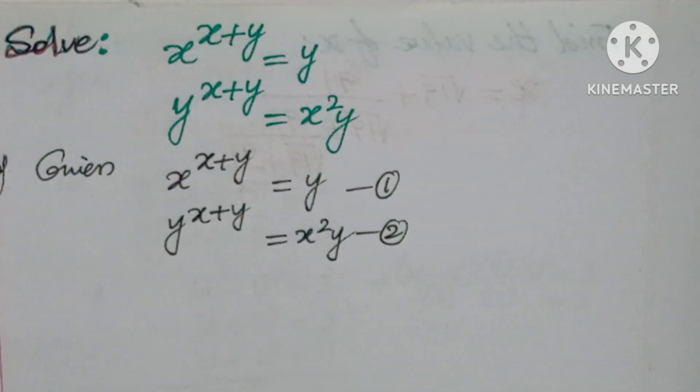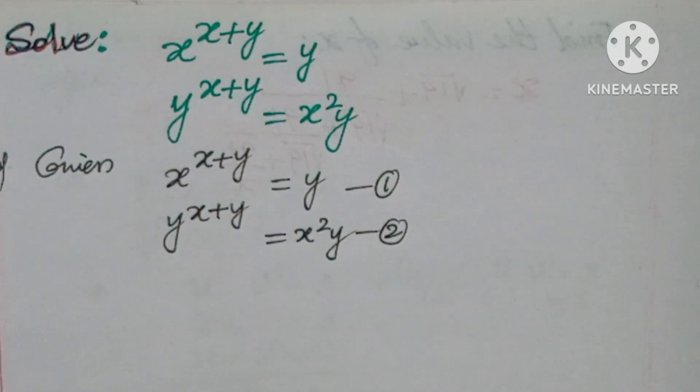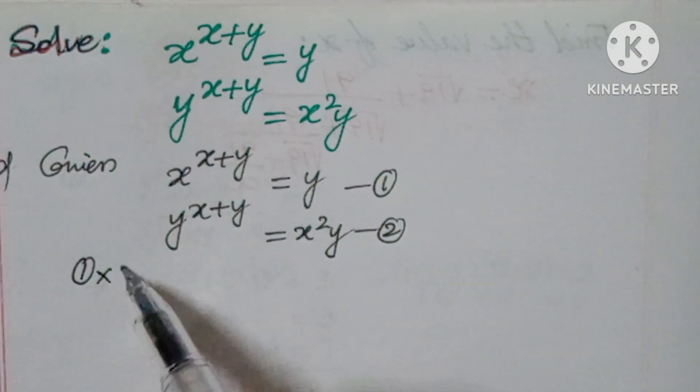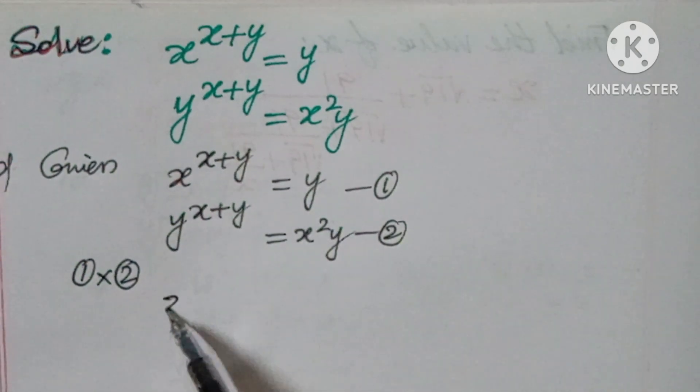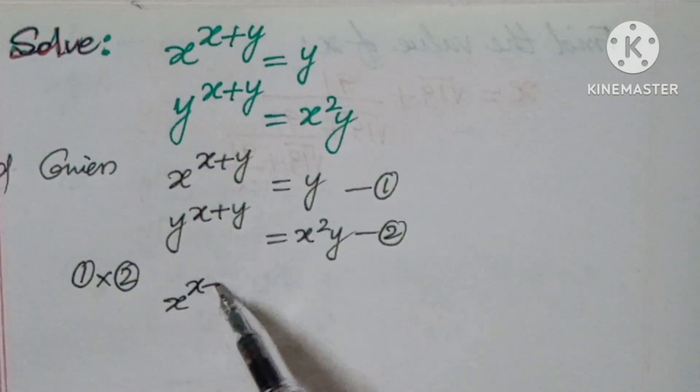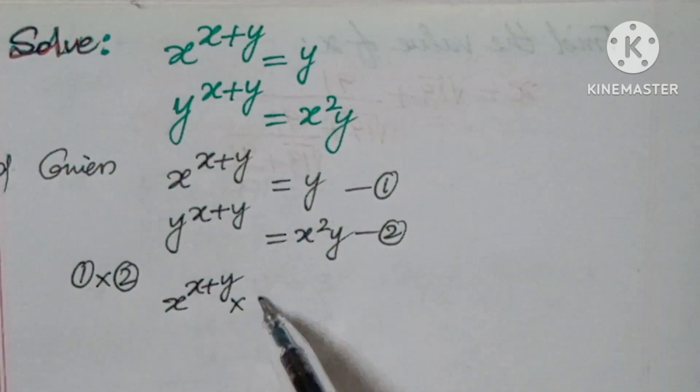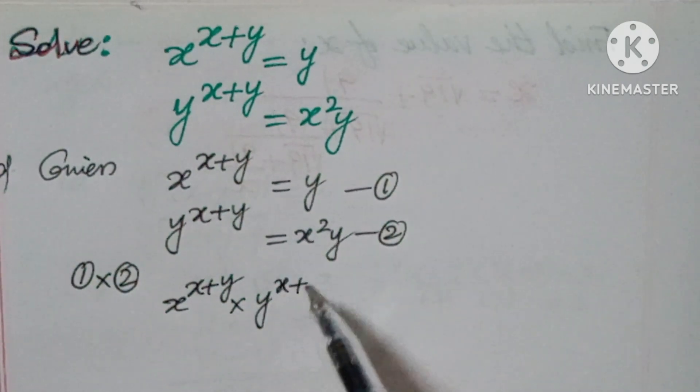If you solve this problem in any way, you are not getting the values. So here you have to multiply both equations, one into two. You'll get x to the power of x plus y times y to the power of x plus y.